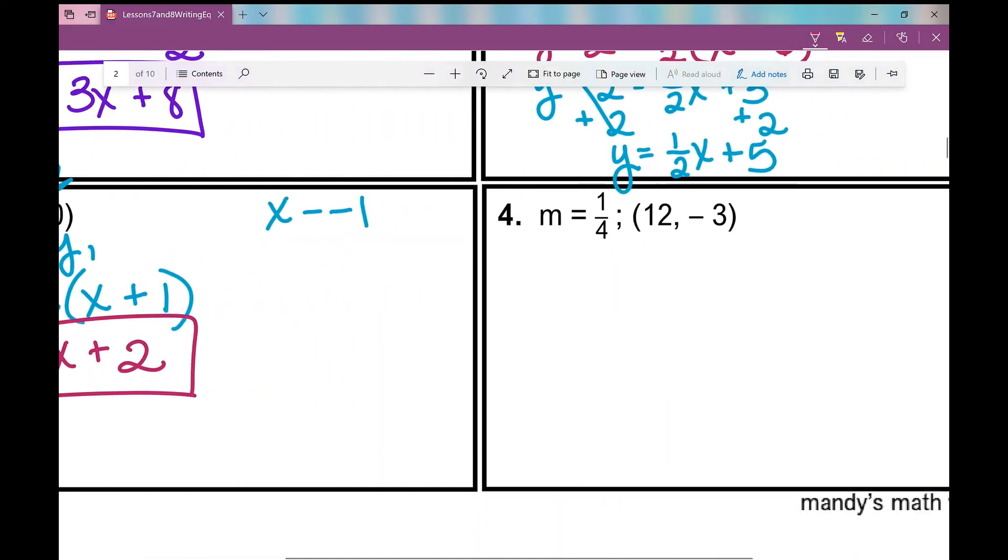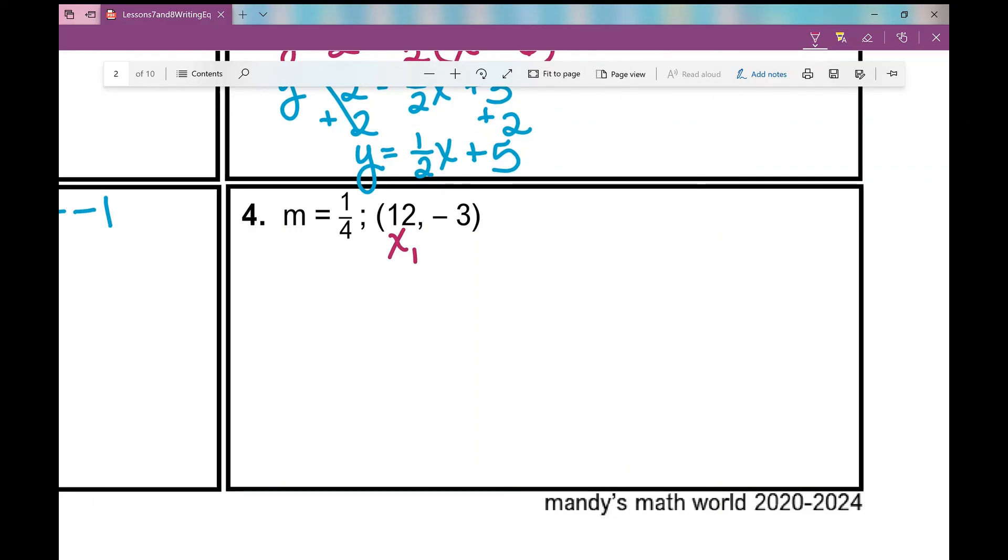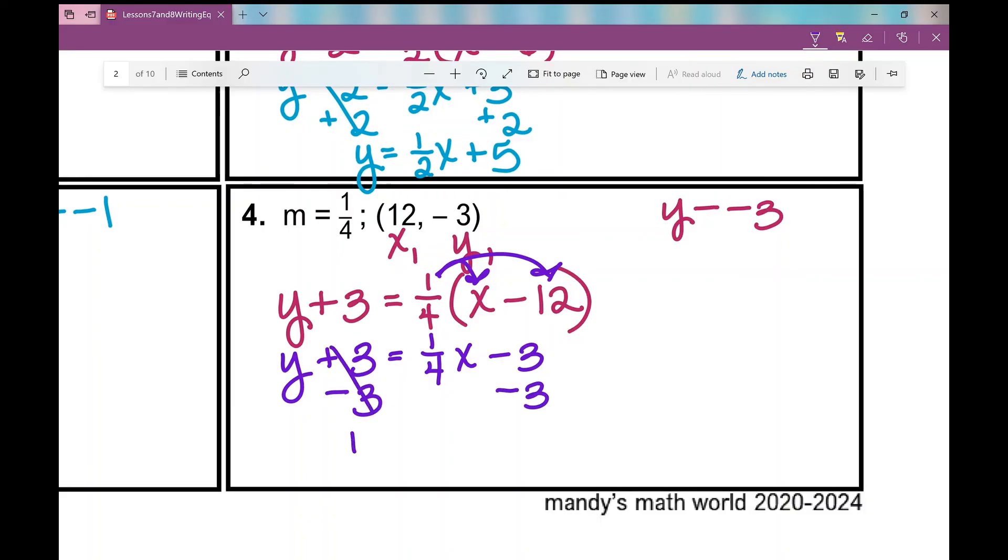Now let's move on to number 4. Slope of 1 fourth, it passes through the point 12, negative 3. So y, y minus negative 3 would be what? y plus 3 equals slope of 1 fourth x minus 12. That's how that should go. And then what do I do to convert it to slope-intercept form? I need to distribute this 1 fourth. So y plus 3 equals 1 fourth x. And then what's a fourth of 12? 3. So minus 3. Then I'm going to subtract 3 from both sides. Again, if I'm going too fast, you can always pause it, rewind it, whatever you need to do. So 1 fourth x. Be careful here. Negative 3 and negative 3 makes negative 6. So that's minus 6.